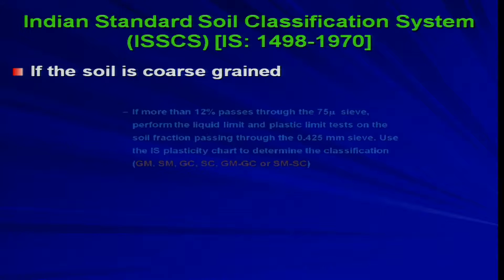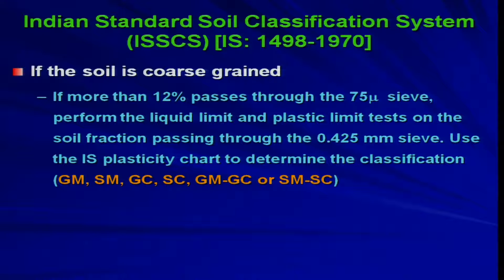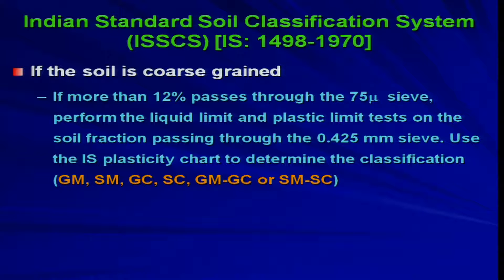Now if the soil is coarse-grained and more than 12 percent passes through the 75 micron sieve — that is, if the fine content is more than 12 percent — then the fines will also participate in classification and in determining the property of the soil. In that case, perform the liquid limit and plastic limit test on the soil fraction passing through the 0.425 mm (425 micron) sieve.